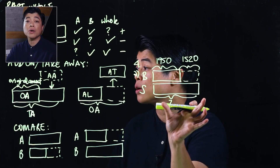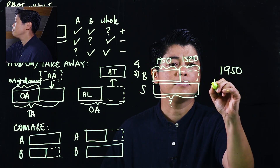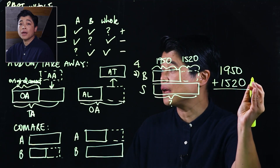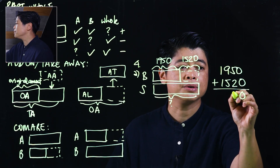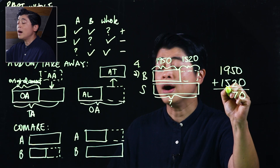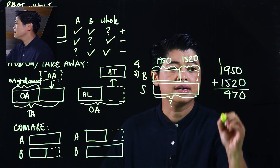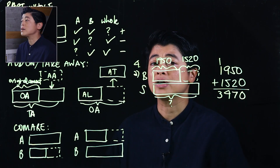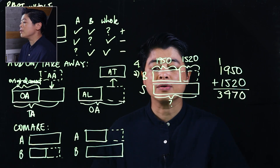We compute 1,950 plus 1,520. Adding right to left: 0 plus 0 is 0, 5 plus 2 is 7, 9 plus 5 gives us 14 — carry the 1 — making this 3,470. Sarah sold 3,470 boxes of cookies.